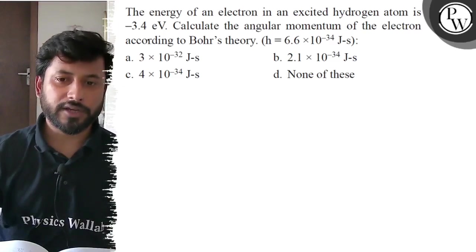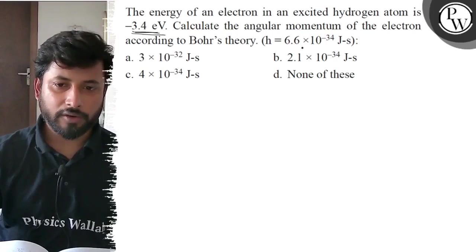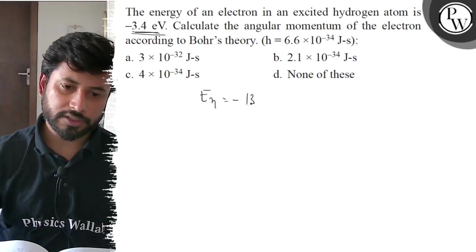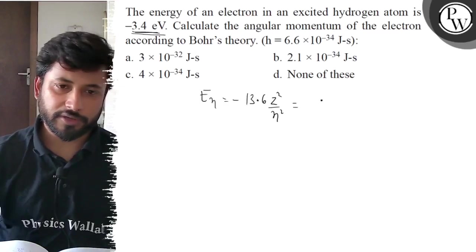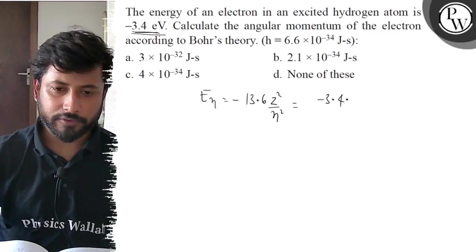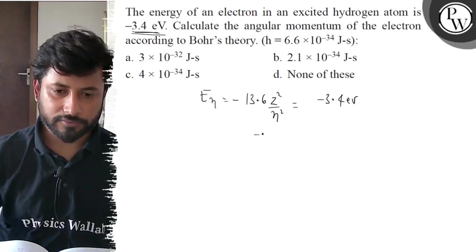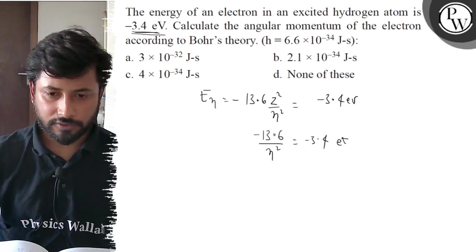The energy of an electron in an excited hydrogen atom is minus 3.4 electron volts. We need to find the angular momentum. The energy Eₙ equals minus 13.6 z² by n². This energy gives us minus 3.4 electron volts. Now we can see here the z value. This is minus 13.6 by n² equals to minus 3.4 electron volts.